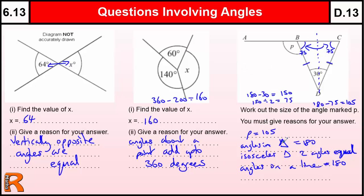So we used three separate rules in that question, and you need to know how to use those. That pretty much covers all the basic rules: vertically opposite angles, angles around a point, angles on a straight line, when you've got marks on a triangle telling you it's an isosceles triangle so you've got symmetry, and then angles in a triangle equal 180.